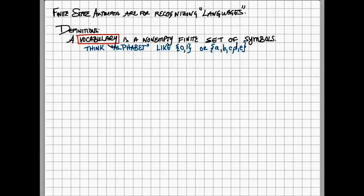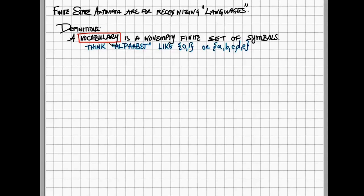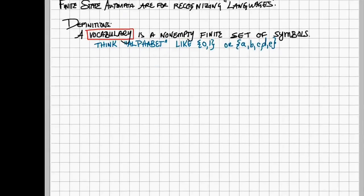So a vocabulary is simply a non-empty, finite set of symbols. This is your alphabet, essentially. So your vocabulary might be the set {0,1} or the letters A, B, C, D, E. It's what your building blocks are.